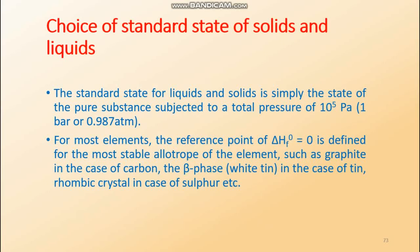Regarding temperature: for most elements, the reference point has ΔHf° = 0, defined for the most stable allotrope of the element — for example, graphite in the case of carbon. The standard enthalpy of formation is taken as zero for the most stable allotrope.